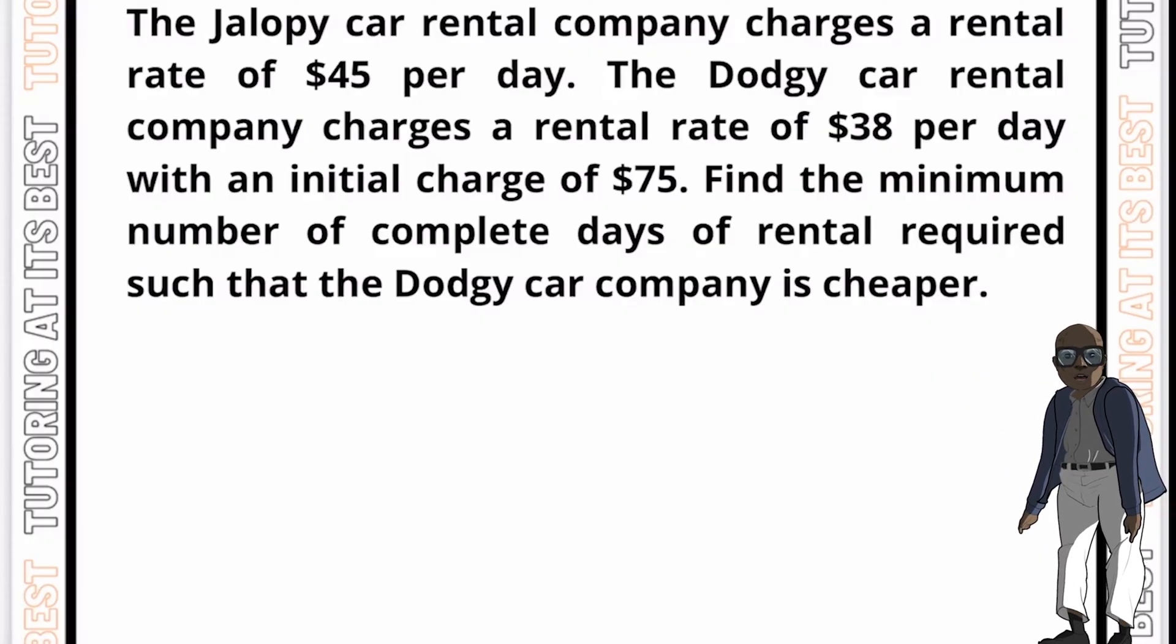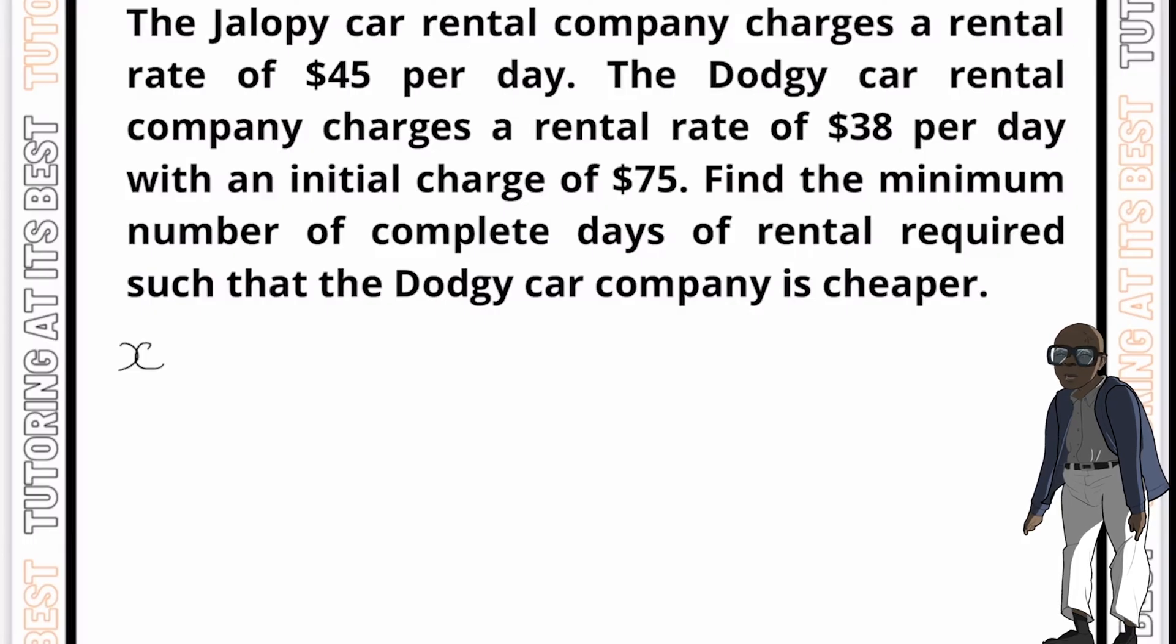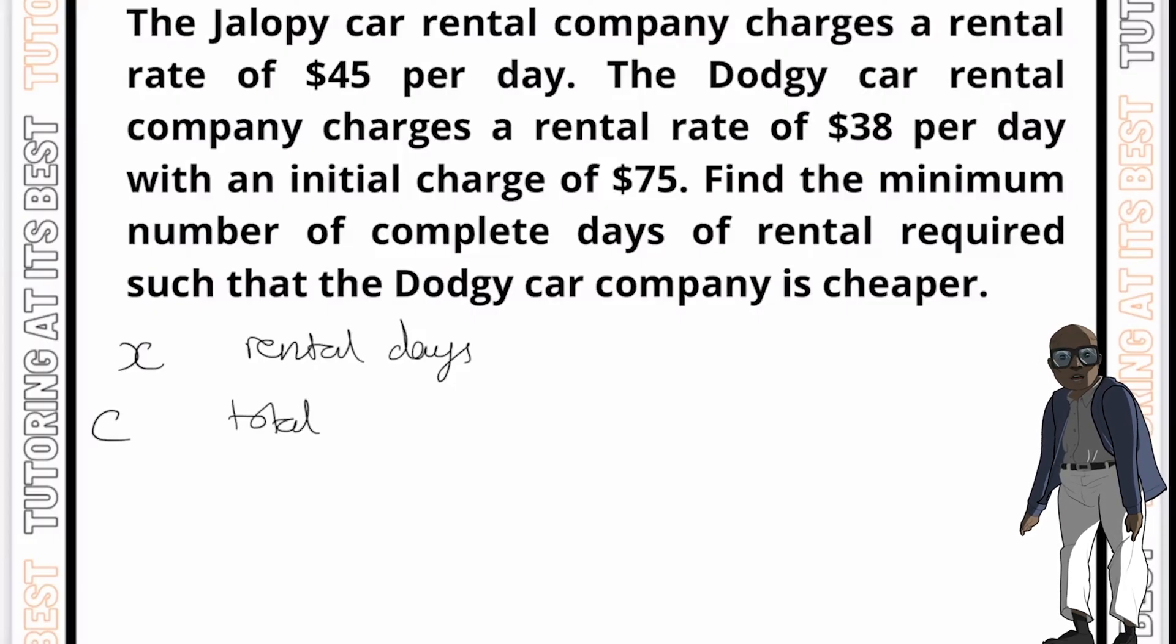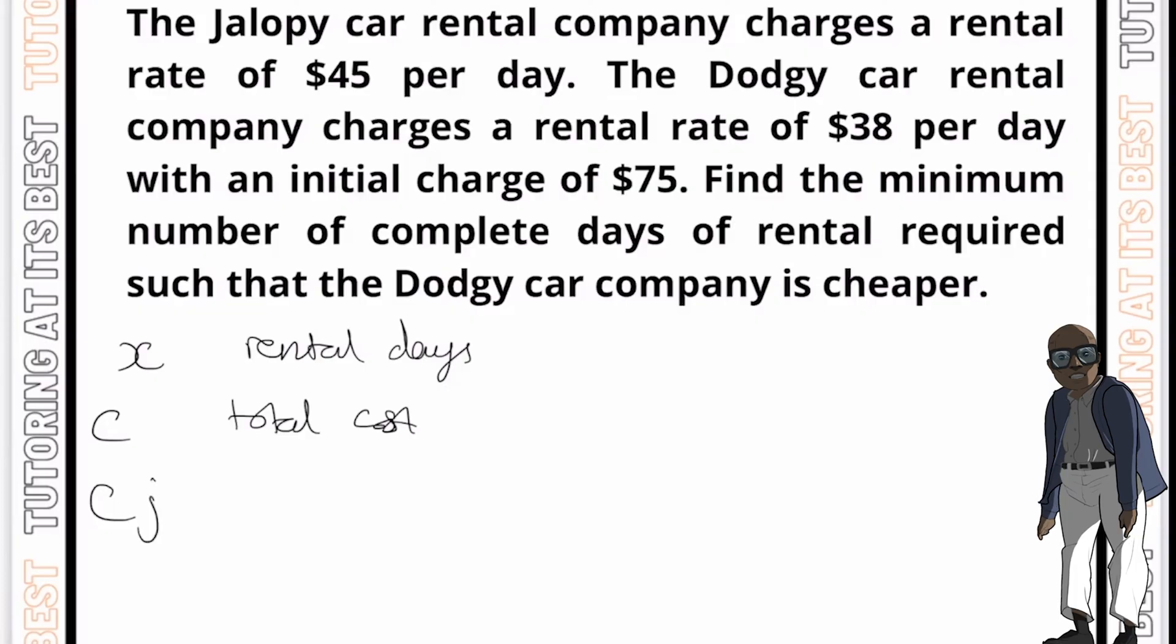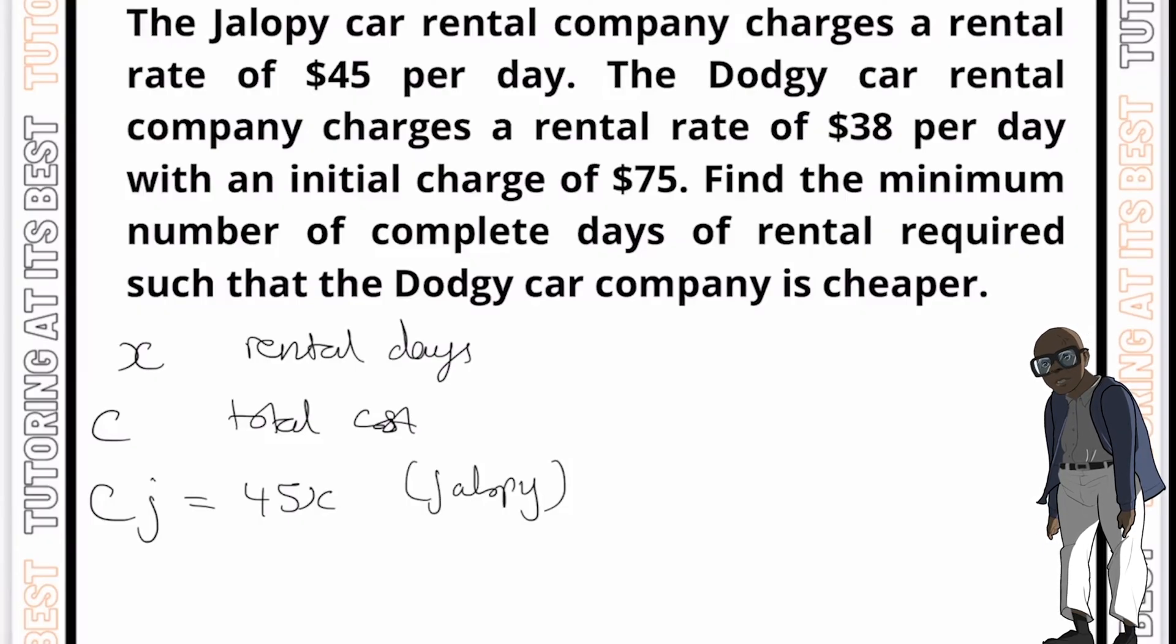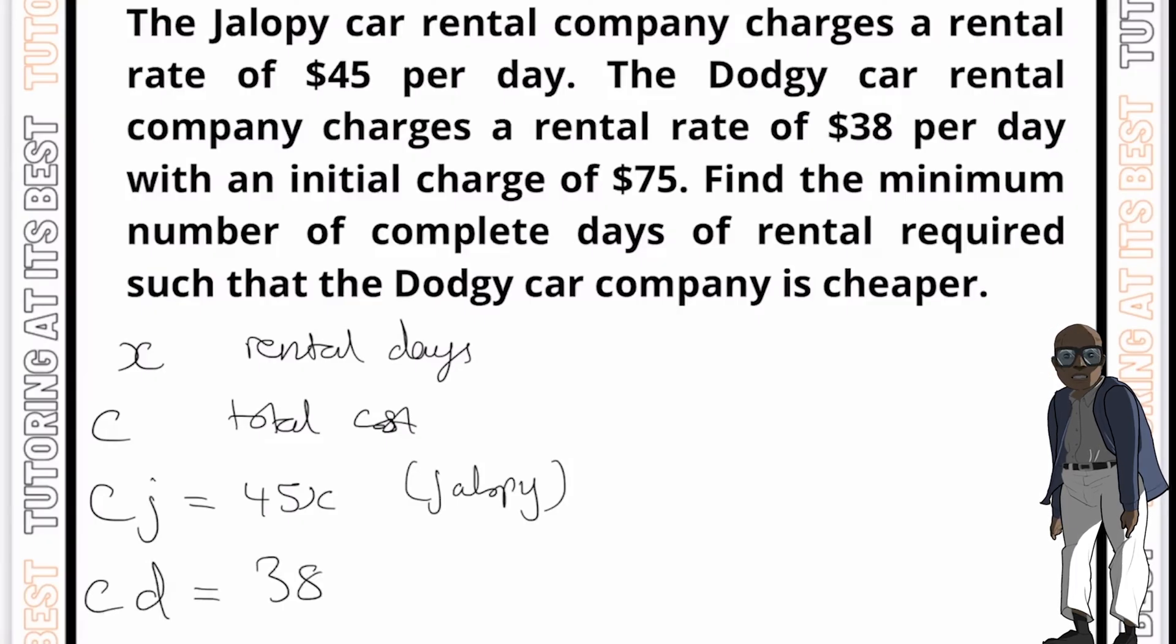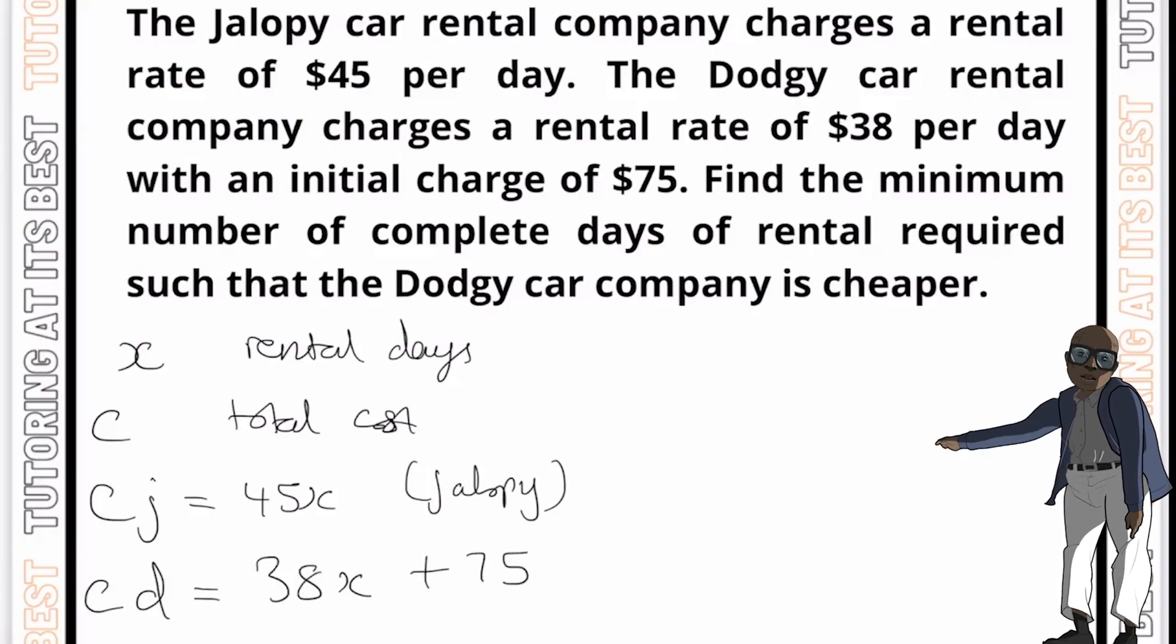Now find the minimum number of complete days required such that the dodgy car company is cheaper. So remember, we need to break down the problem into smaller parts. So let's define firstly, let's have X as the number of complete days of rental. We will then have C as our total cost of the rental. And for Jalopy, the cost of rental can be represented as CJ equals 45X. So again, that's the cost of Jalopy. And for dodgy car rentals, the cost of the rental can be represented as the cost of dodgy equals 38X plus 75, hence the initial charge.